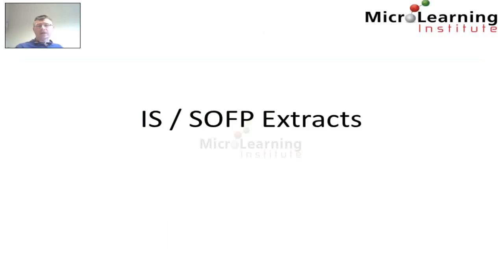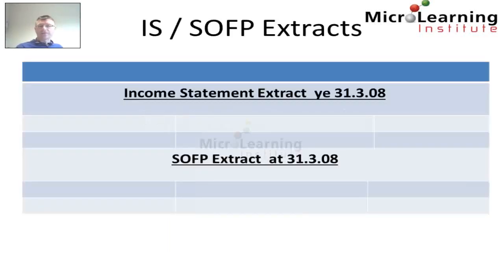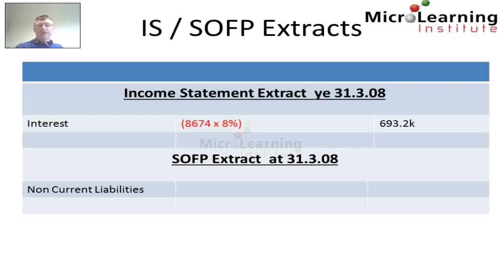Now let's look at how this is represented on both the income statement and the statement of financial position, taking an extract from each. Given that our loan is $8.674 million and the market interest rate is 8%, in our income statement for the year ended 31st of March 2008 we recognize an interest expense of $693,200 in respect of this financial liability. On our statement of financial position we have a non-current liability made up of the original $8.674 million of the debt instrument plus the interest accrued of $693,200, less the cash of $300,000 which represents our payment in arrears at the end of year one.